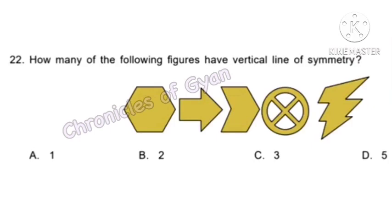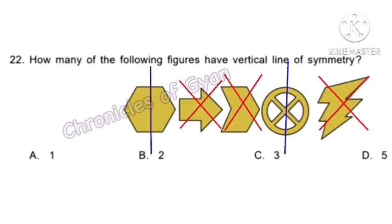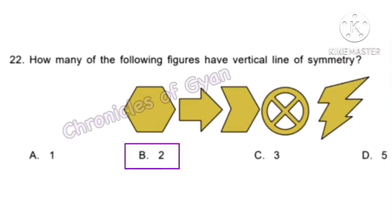Question 22. How many of the following figures have a vertical line of symmetry? A vertical line of symmetry divides a shape into two identical halves vertically. Checking each figure: figure 1 — yes, figure 2 — no, figure 3 — no, figure 4 — yes, figure 5 — no. Hence there are two figures with vertical line of symmetry.